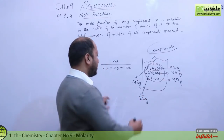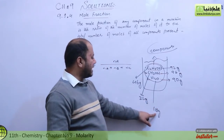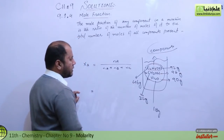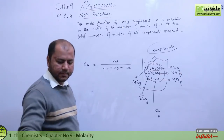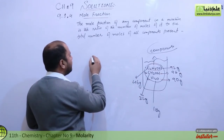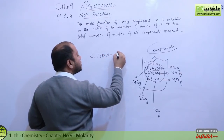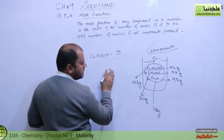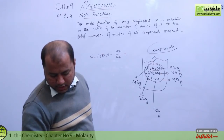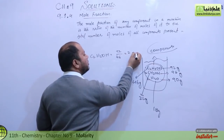Now let's calculate moles. For ethyl alcohol: mass is 92 g, molar mass is 46, so moles of A = 92 divided by 46 = 2 moles. For methyl alcohol: mass is 96 g, molar mass is 32, so moles of B = 3 moles.